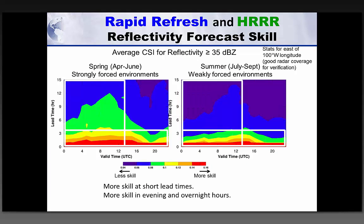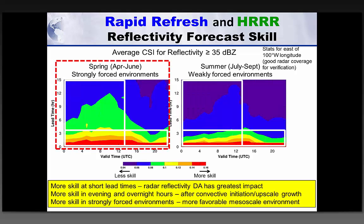Generally speaking, the three regimes: forecast skill validated in terms of radar reflectivity shows more skill at short lead times — this is lead time on the vertical axis, time of day on the horizontal, higher skills in red colors. More skill also in the early overnight hours where there's greater coverage of convection. We get more impact from assimilating observed radar reflectivity in these convective regions, and also in more strongly forced environments earlier in the year where the synoptic-scale environment is favorable for convection development.